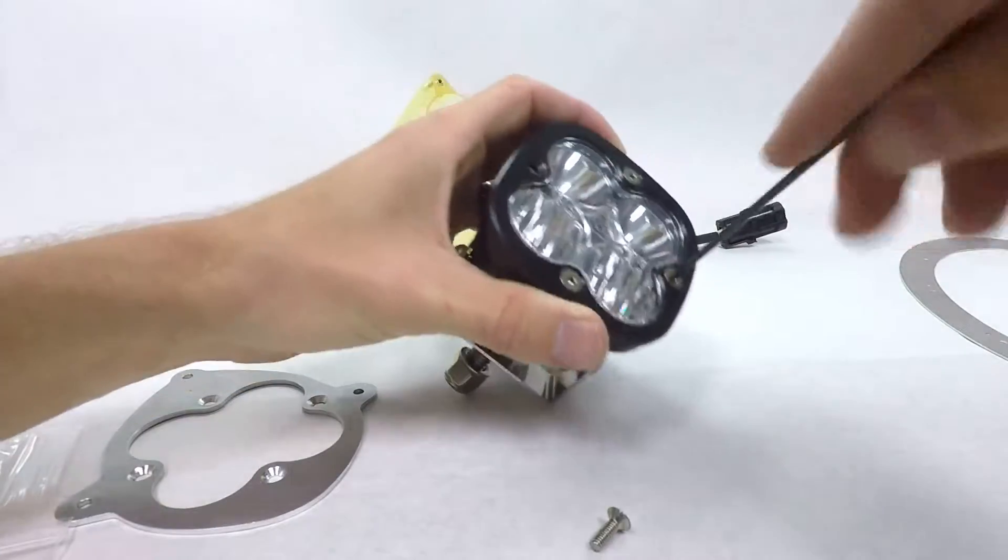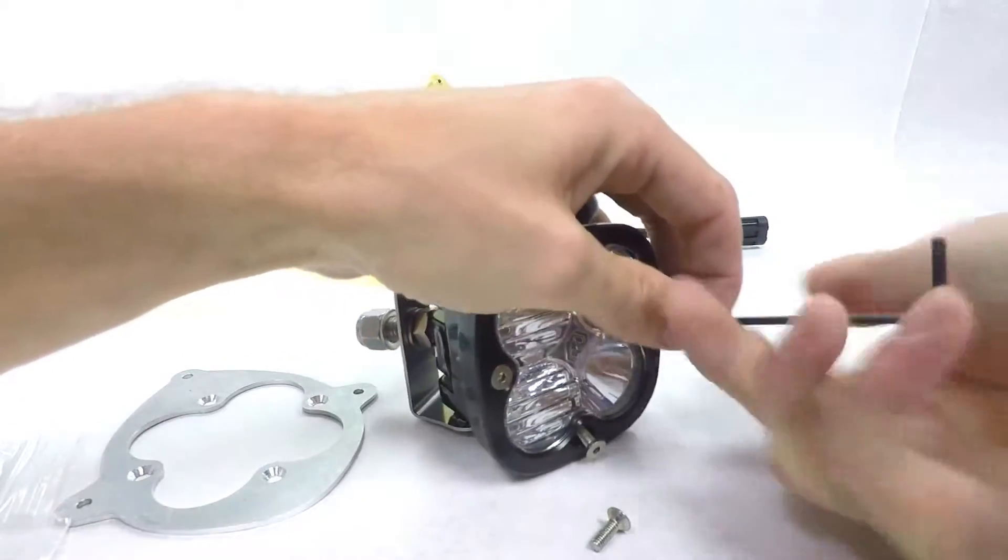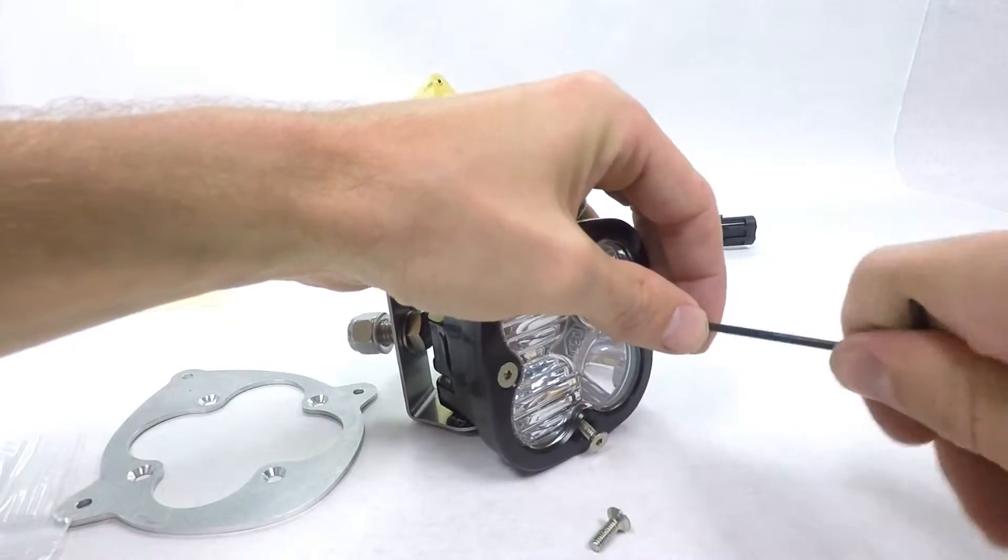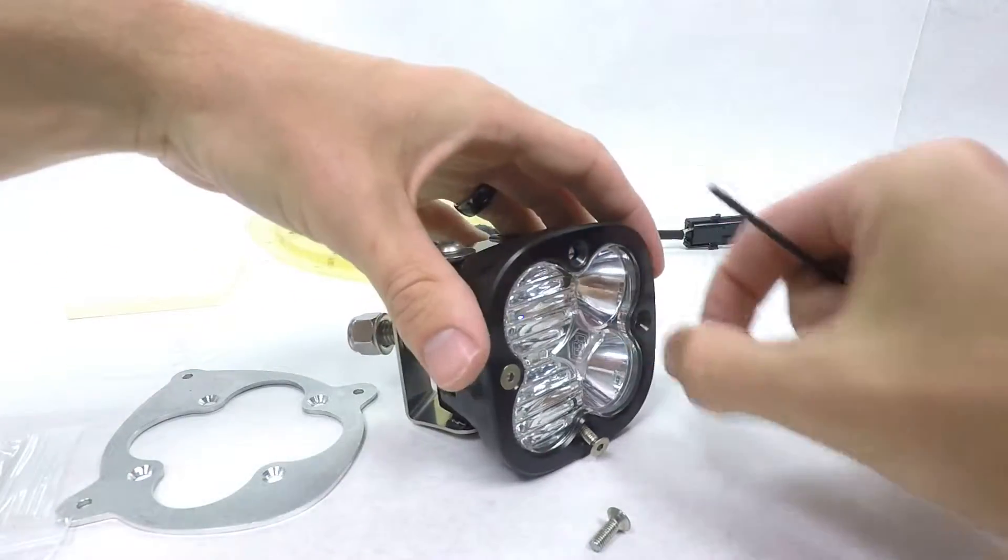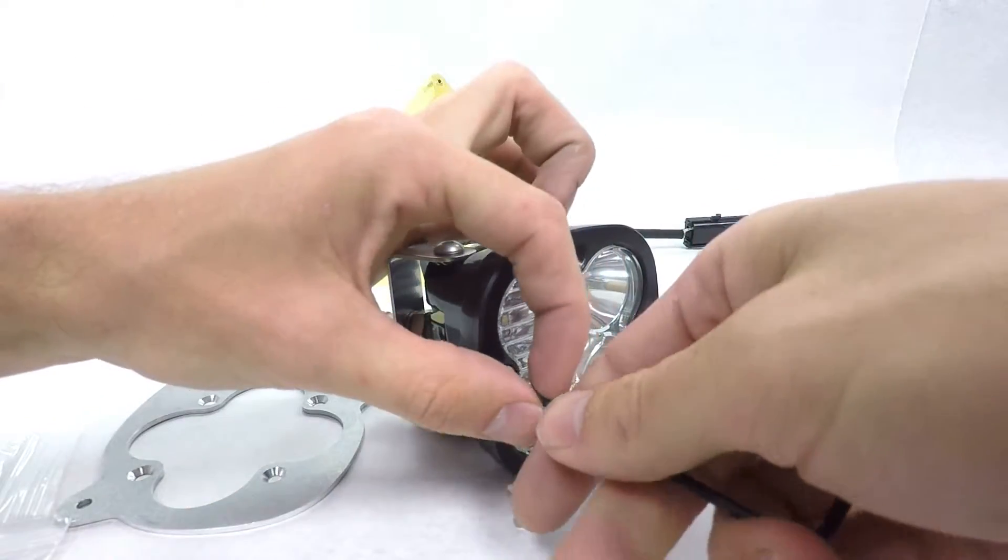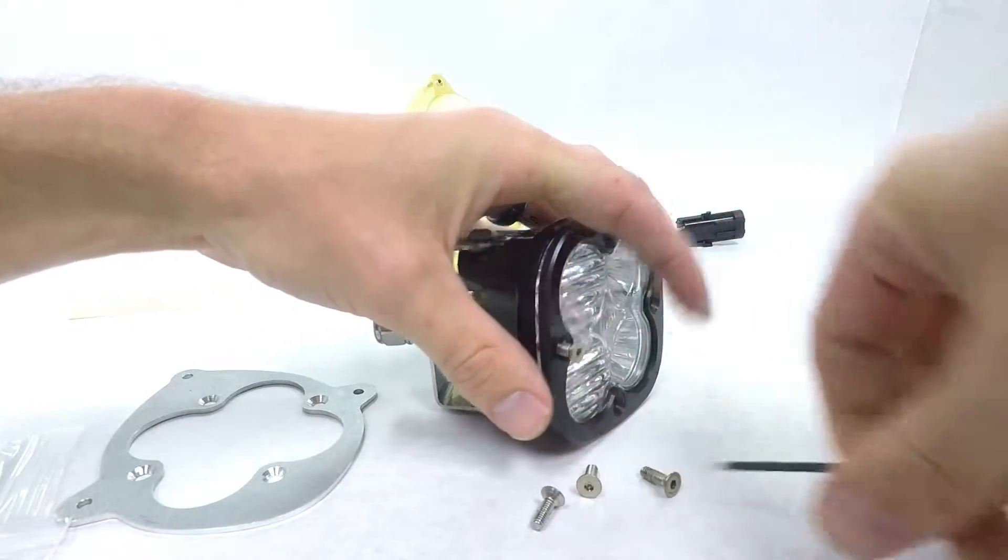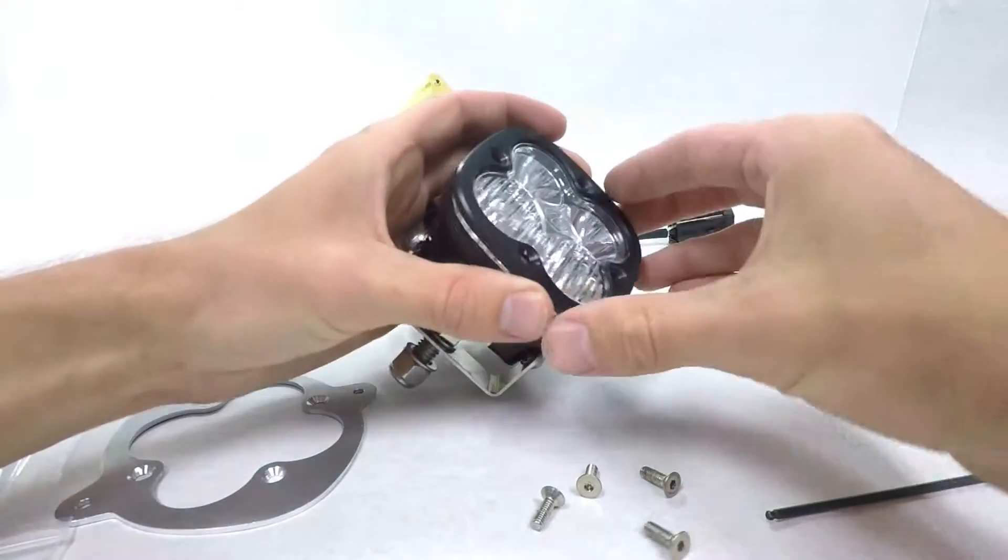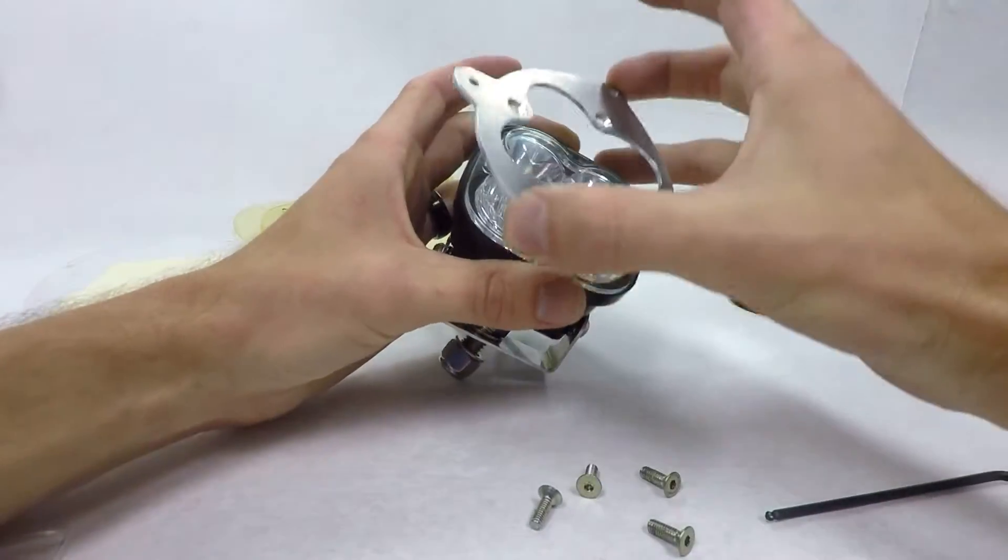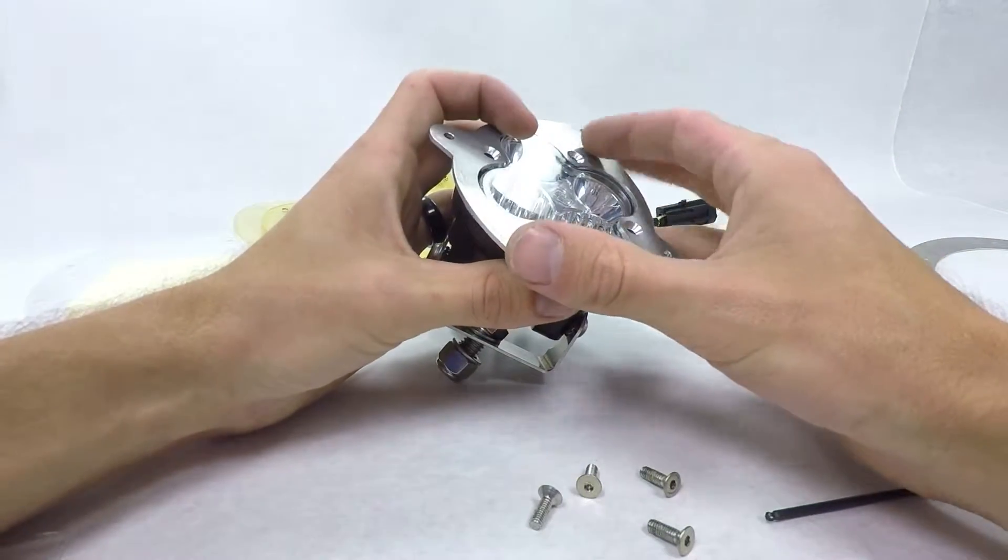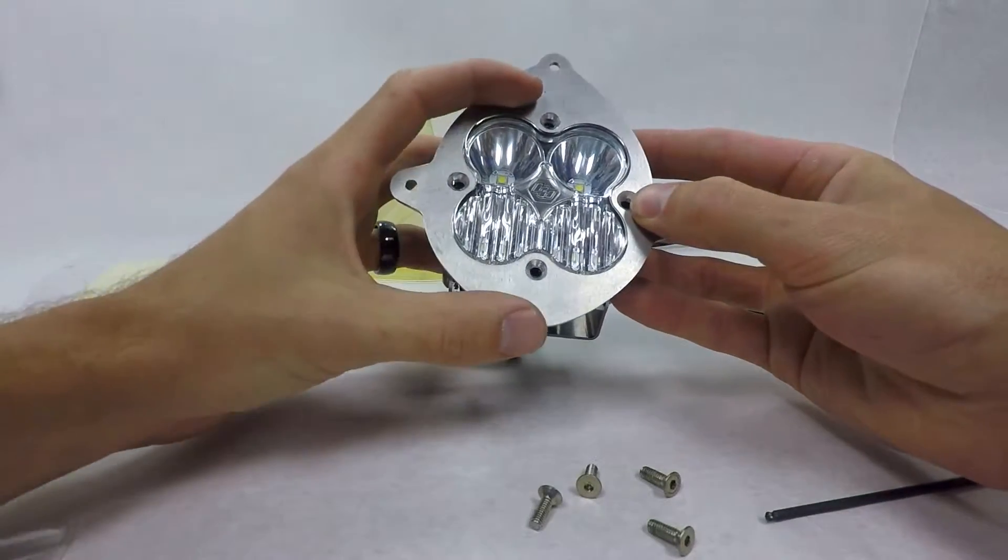So you're going to take this out, take the stock bezel off. Replace it with the bezel included in your kit from Aerosport Products. Basically just line everything up like that.